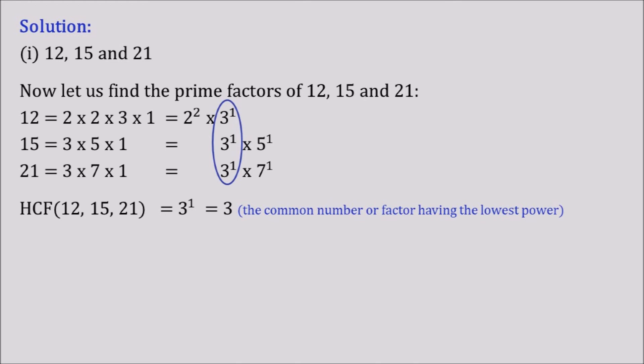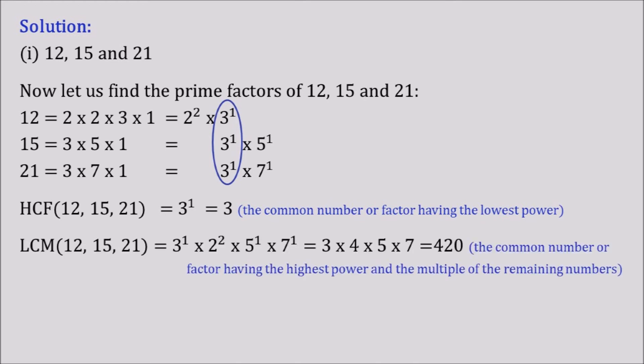Now let us move ahead to LCM. Finding the LCM of 12, 15, and 21, we get 3 to the power 1 into 2 to the power 2 into 5 to the power 1 into 7 to the power 1, which is 3 × 4 × 5 × 7, equal to 420. The definition of LCM says the common factor having the highest power, multiplied by the remaining numbers. The common number is 3 with highest power 1, and the remaining numbers are 2, 5, and 7. So LCM = 3¹ × 2² × 5¹ × 7¹ = 3 × 4 × 5 × 7 = 420.